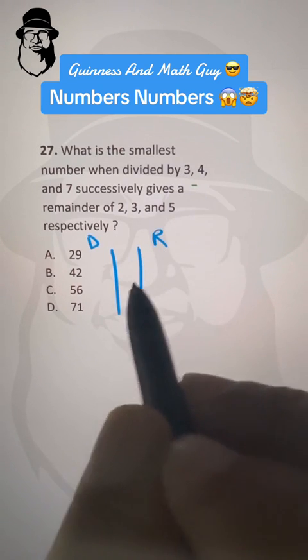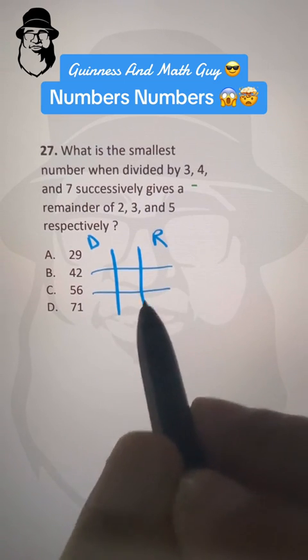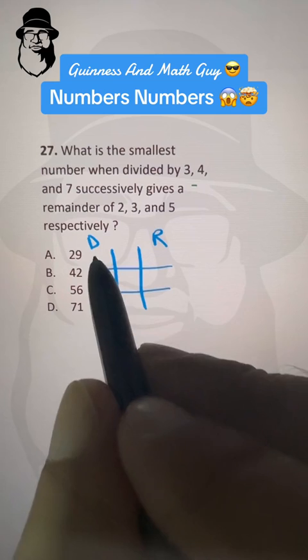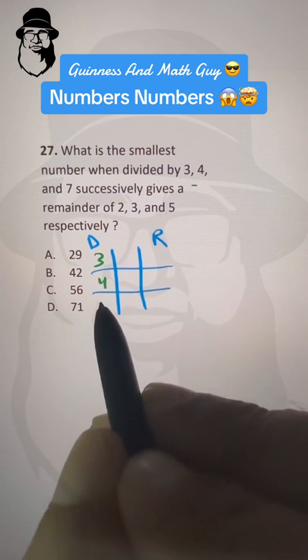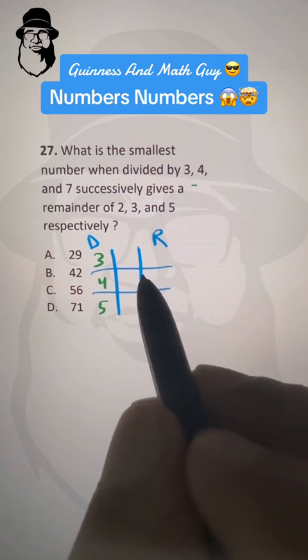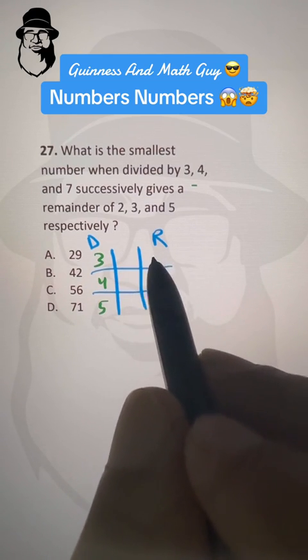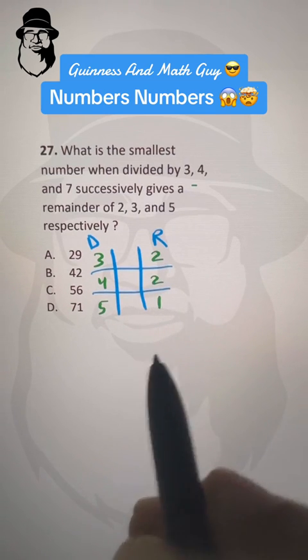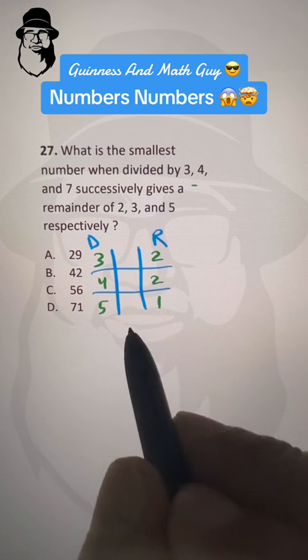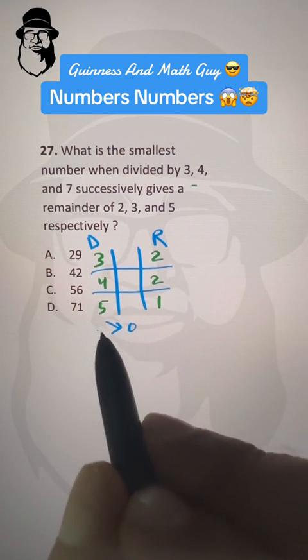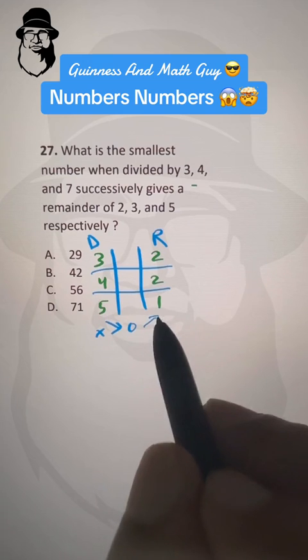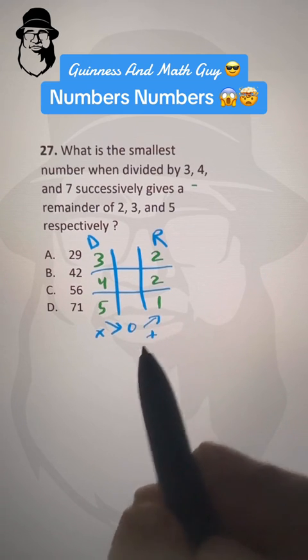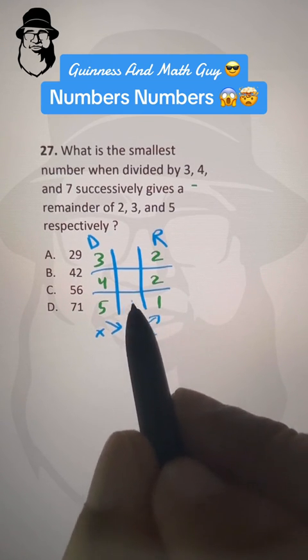Here we can write the remainders. So our divisors are 3, 4, and 5 and remainders are in case of 20 that we started 2, 2, and 1. So we need the smallest, so we will start with 0. 5 times 0 is 0, then plus 1 is 1. So we will write 1 here.